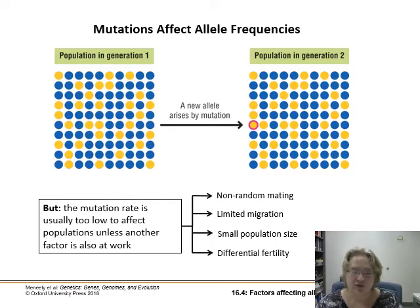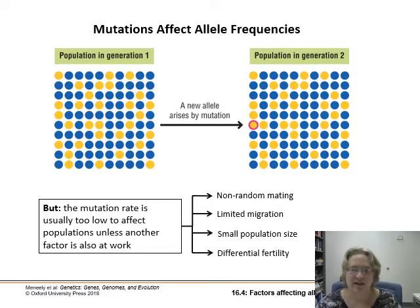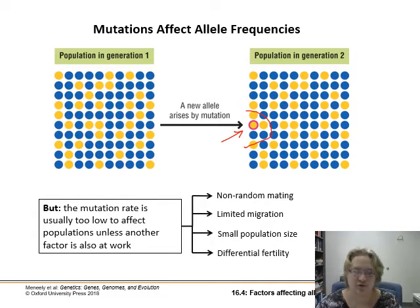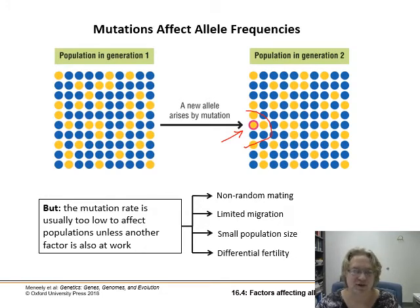The first factor is mutation. As soon as a new allele arises by mutation, it affects the allele frequency. However, the mutation rate is usually too low to affect a population on its own unless something else is also at work — unless it's incredibly beneficial and gets selected for, or migration carries it out, or genetic drift amplifies it, or it confers differential fertility. From Mendelian genetics simulations, new mutations tended to fizzle out most of the time, so something else has to drive them.